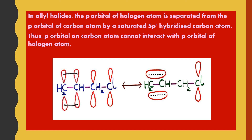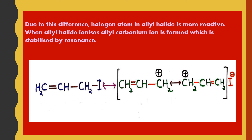The p-orbital of the halogen atom is separated from the p-orbital of the carbon atom by a saturated sp3-hybridized carbon atom, and thus the p-orbital on the carbon atom cannot interact with the p-orbital of the halogen atom. The diagram clearly shows this difference — the p-orbital of chlorine and the p-orbital of the unsaturated carbon cannot interact because they are separated by an sp3-hybridized carbon. Because of this difference, the halogen atom in allyl halide is more reactive and comes out as a halide ion.